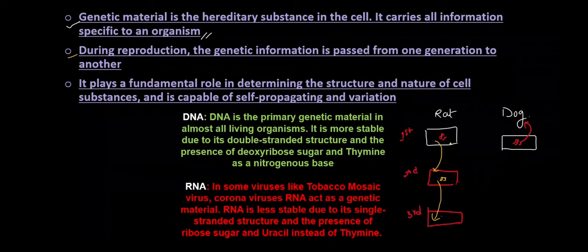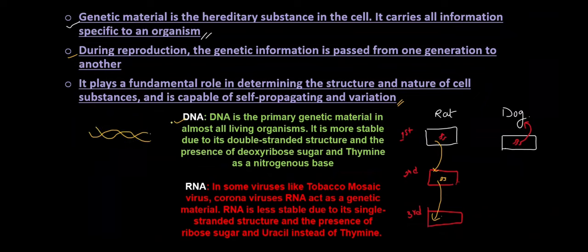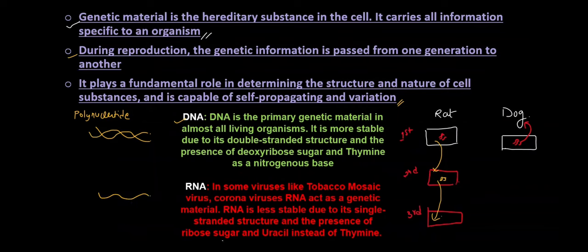Genetic material has to have the capacity to undergo variation, and we will see in future videos how genetic material gains variation. DNA is primarily the genetic material in almost all living organisms. It is more stable due to being double-stranded, the presence of deoxyribose sugar, and thymine as a nitrogenous base. DNA is made up of polynucleotides — it has two chains of polynucleotides which are helically coiled. Due to the presence of two polynucleotide chains, there is also hydrogen bonding, which is another reason why DNA is more stable than RNA. Whereas in the case of RNA, there is only one strand.